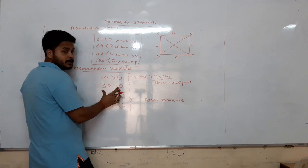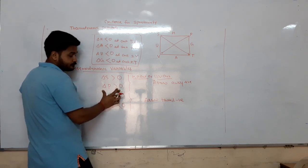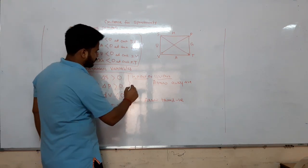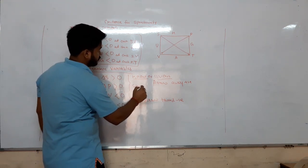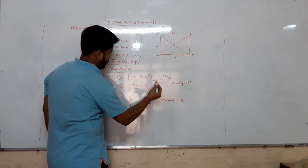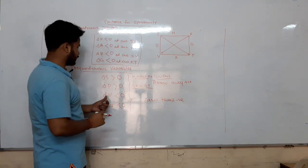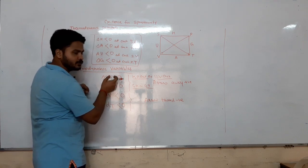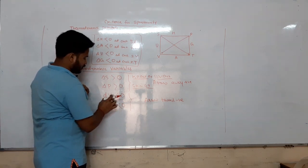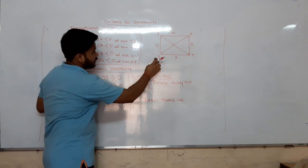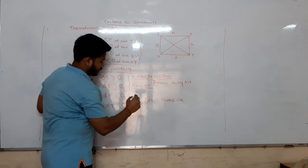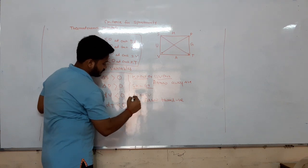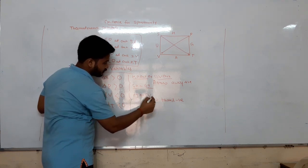What is the case for delta P? At H and S constant. If the value is coming less than 0, this value is negative for spontaneity. Delta P less than 0 at constant S and V.